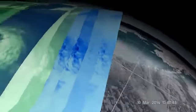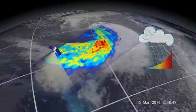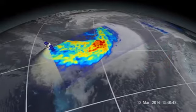Scientific algorithms then translate the GMI's brightness temperature data into more meaningful products, such as rain rates.